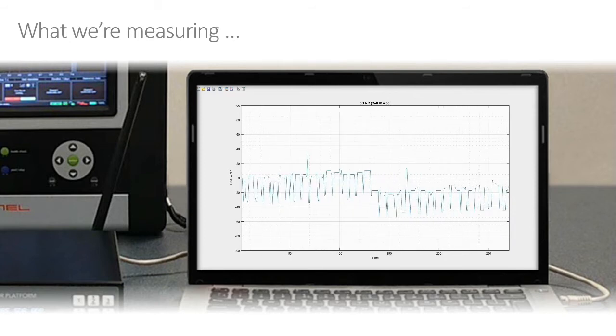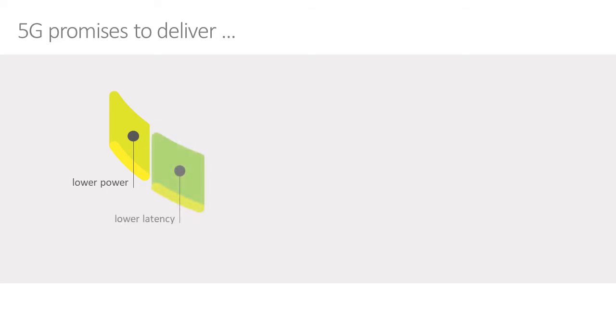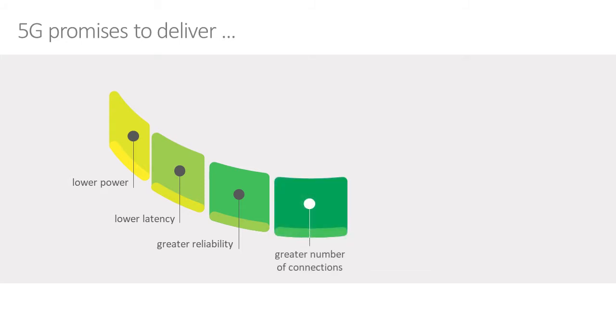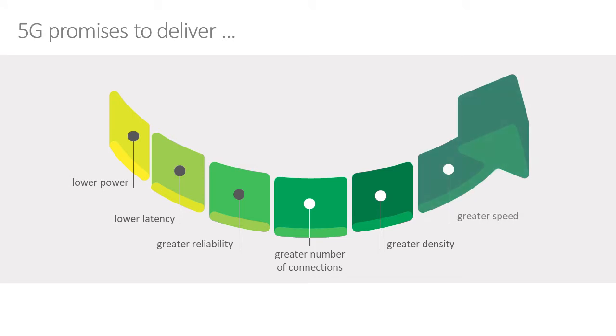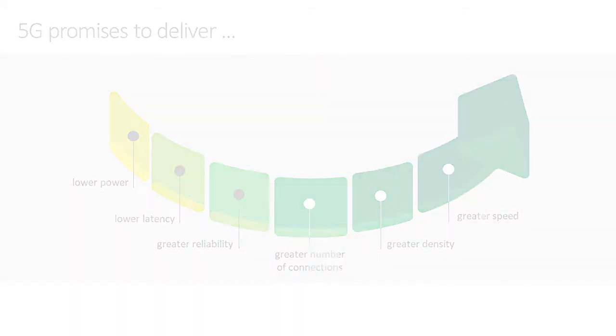So why do we need to measure this? First of all, let's take a quick look at 5G and all its promises. It's a big step up from 4G. We're trying to do things with lower power, lower latency of network connections, and improved reliability. We're also trying to improve the density of connections, going from about 10,000 per square kilometer to about a million — two orders of magnitude improvement — while also trying to make it all go faster.